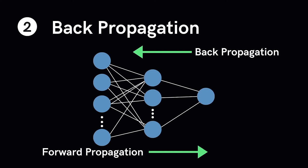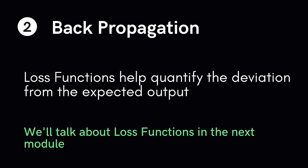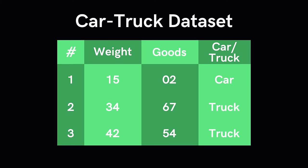Backpropagation is almost like forward propagation, except in the reverse direction. Information is passed from the output layer back to the hidden layers. Backpropagation is the reason neural networks are so powerful — it's why they can learn by themselves. After forward propagation produces a prediction that could be right or wrong, the neural network evaluates its own performance. If it is wrong, the network uses a loss function to quantify the deviation from the expected output, and this information is sent back to the hidden layers so weights and biases are adjusted to increase accuracy.